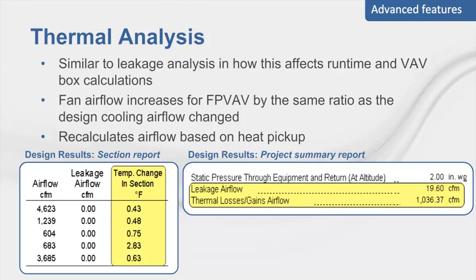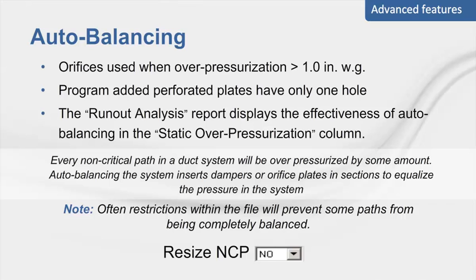The temperature change is displayed on a section-by-section basis in the design results section report, and the total airflow added to the system is displayed on the project summary report. When auto balance is selected, the program will add dampers and adjust them in sections where over-pressurization is present to decrease the excess static available. Perforated or orifice plates are added to sections with over-pressurization exceeding one inch water gauge for acoustical purposes. Dampers or plates added by the system contain the prefix AUT in their fitting ID. To remove program-added fittings, uncheck the auto balance checkbox. Sections can be set to have no fittings added despite being over-pressurized by selecting the don't add dampers/orifices checkbox on the sections tab.